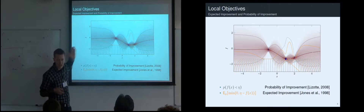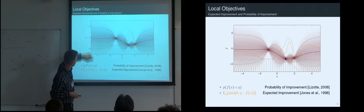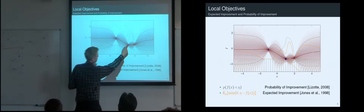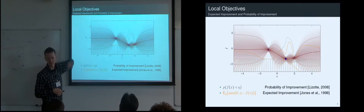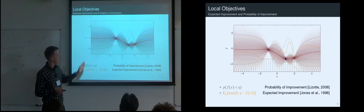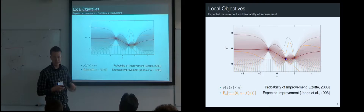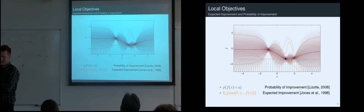You could sum up the mass in the tails everywhere — that's called the probability of improvement, giving you the gray line. Or you could sum up the mass multiplied by a linear function — those are the orange objects — and integrating gives you the expected improvement, the orange line. The important thing is this is a totally local computation: at each point, there's a one-dimensional Gaussian distribution, and we ask what's the chance that if we evaluate there we'll get a small number.